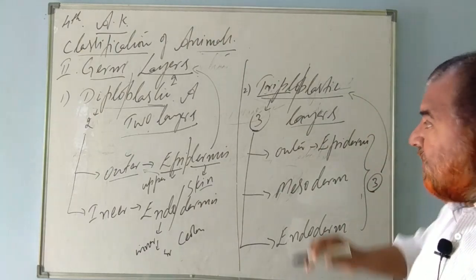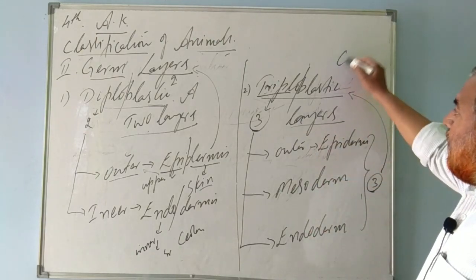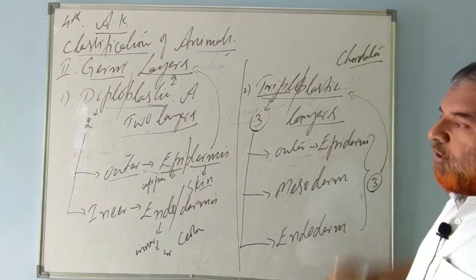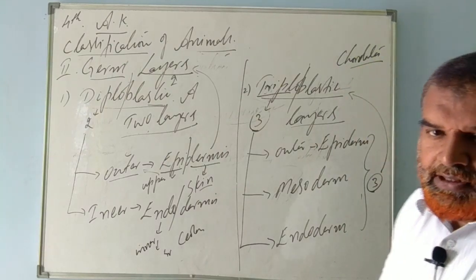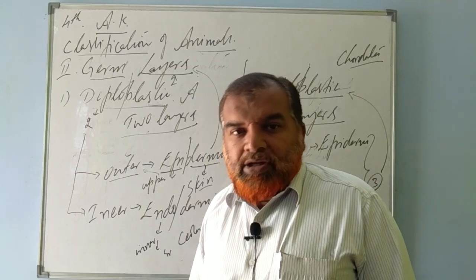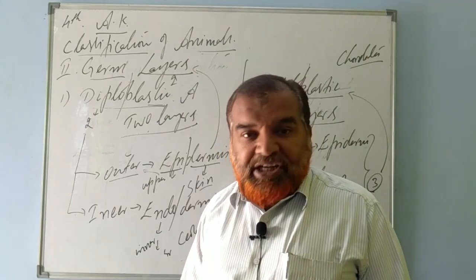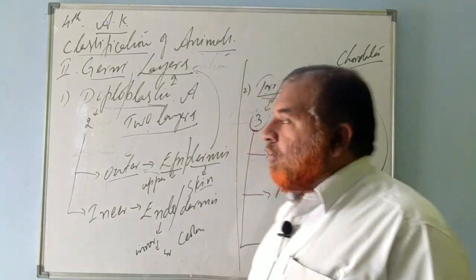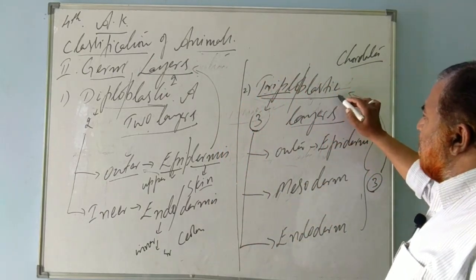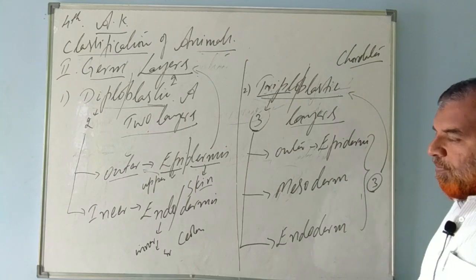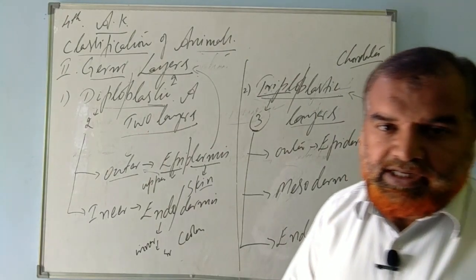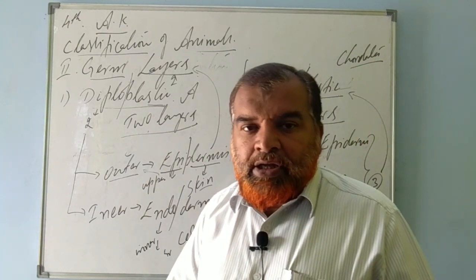All higher mammals — those animals that have a backbone, spinal cord, or notochord — belong to the triploblastic category. So higher mammals and higher animals are all triploblastic animals.